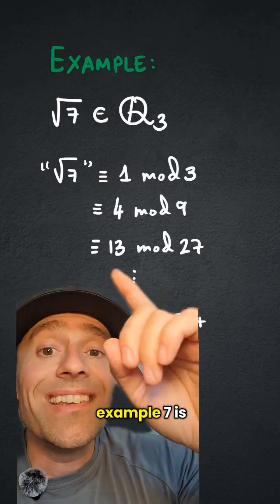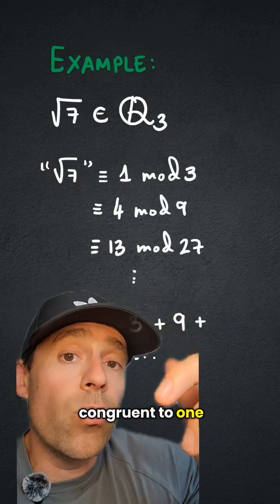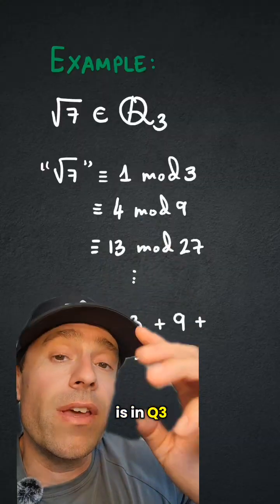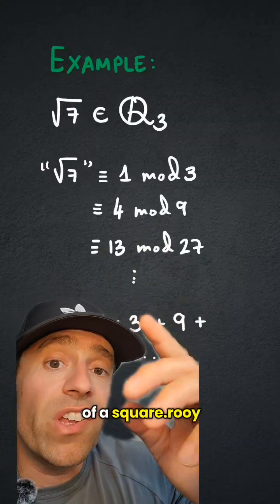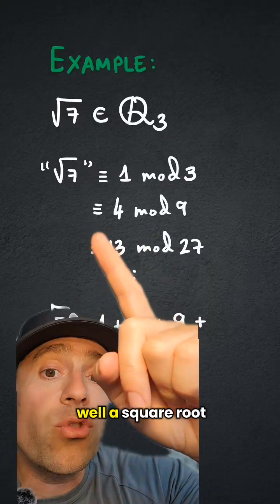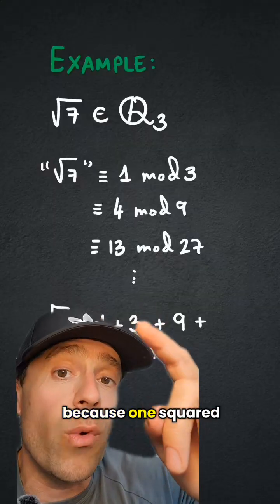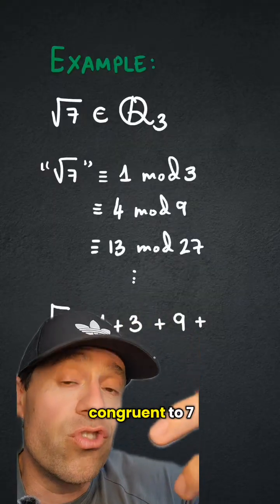For a concrete example, 7 is congruent to 1 modulo 3, which is a square modulo 3, so the square root of 7 is in Q_3. What's the expansion of square root of 7 in Q_3? Well, square root of 7 is congruent to 1 modulo 3, because 1 squared is 1 is congruent to 7 modulo 3.